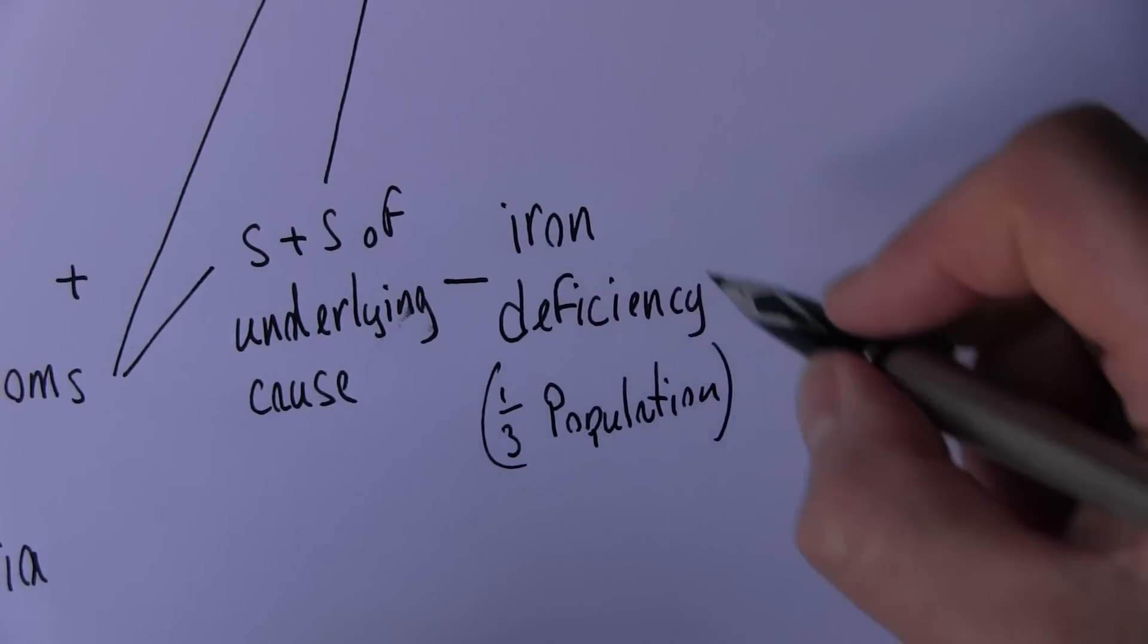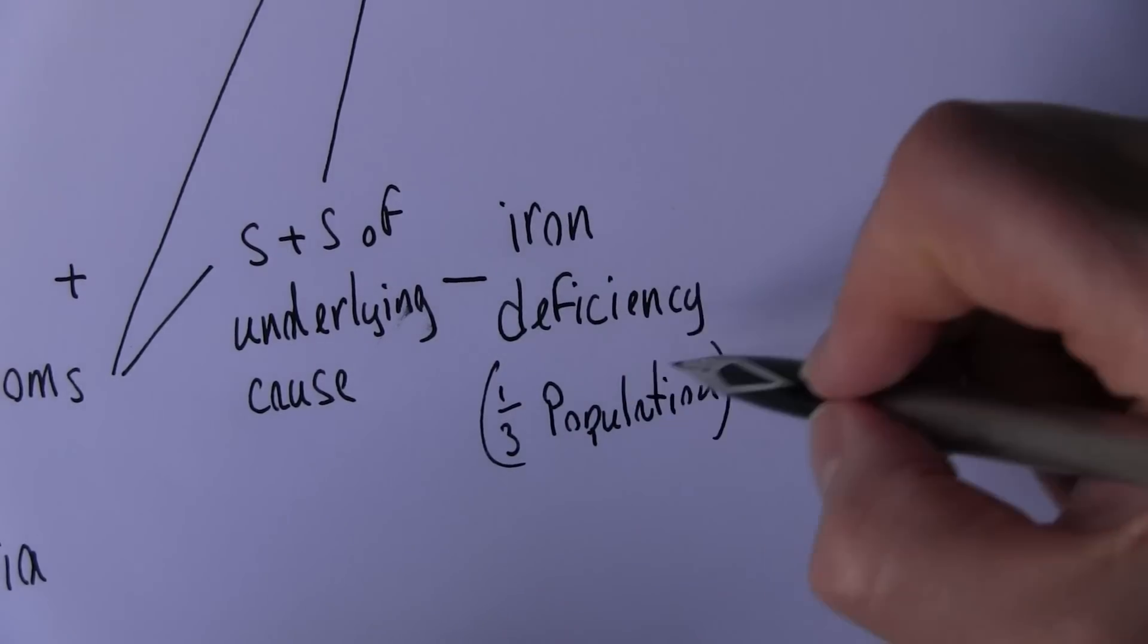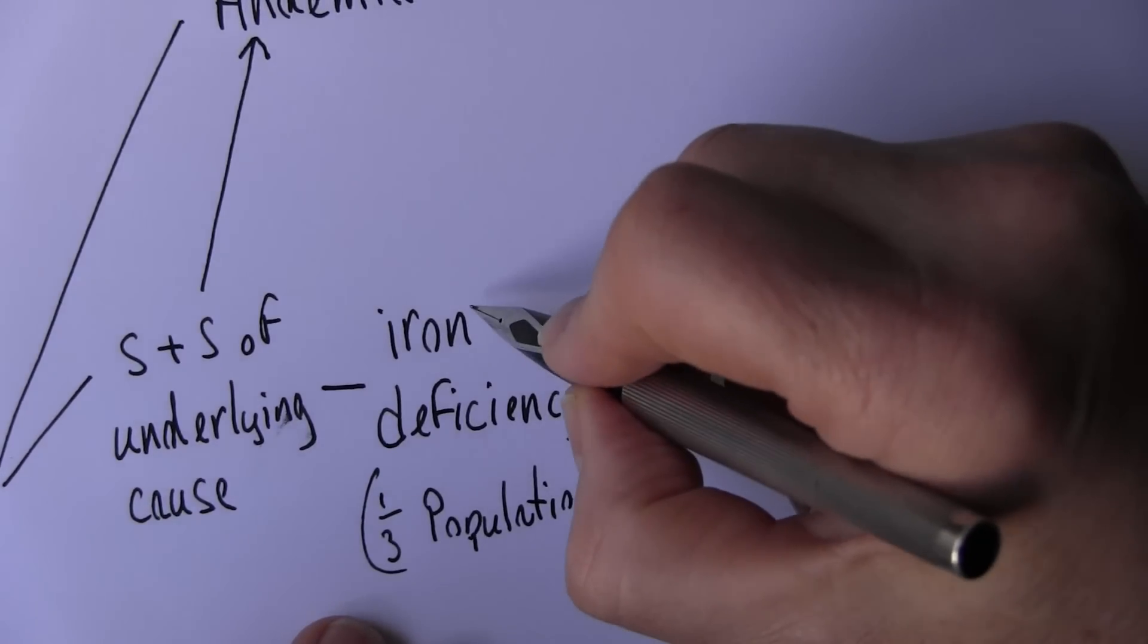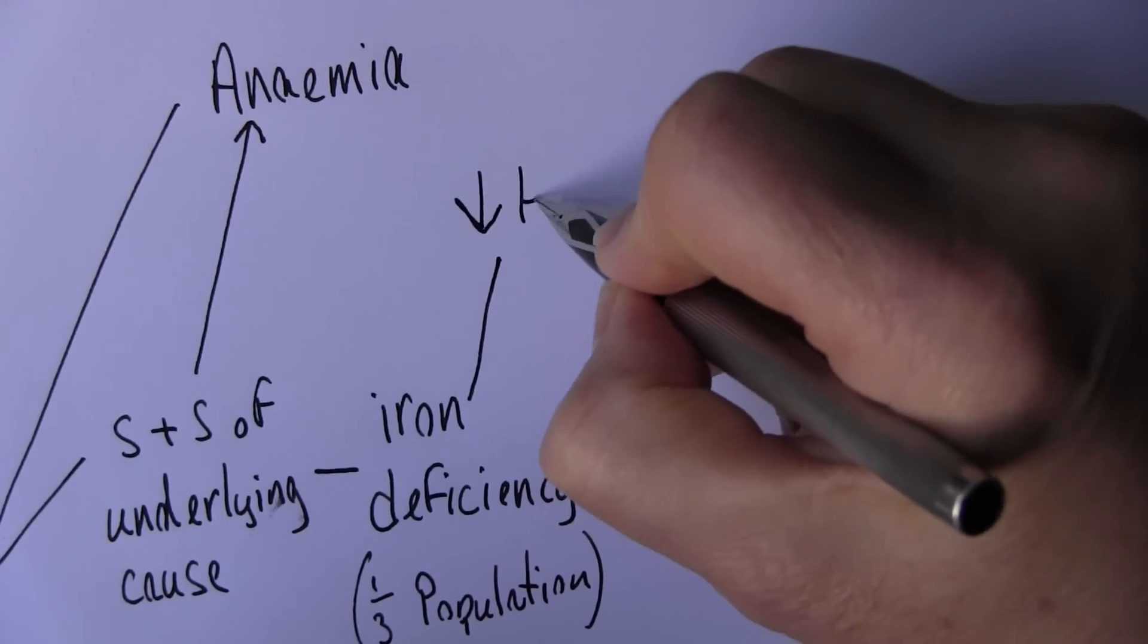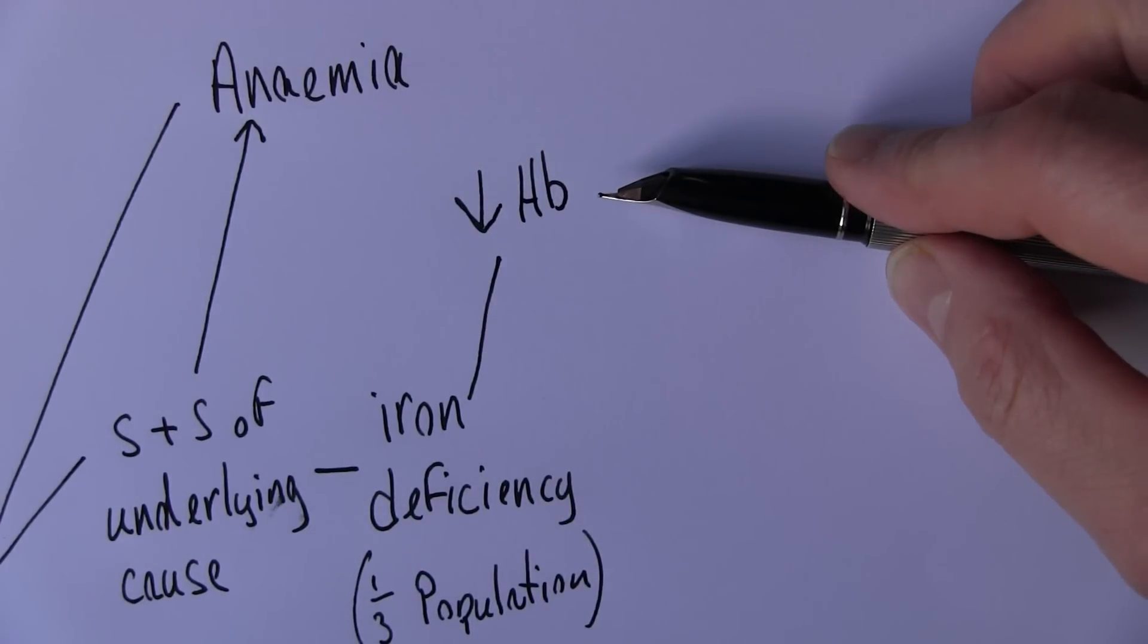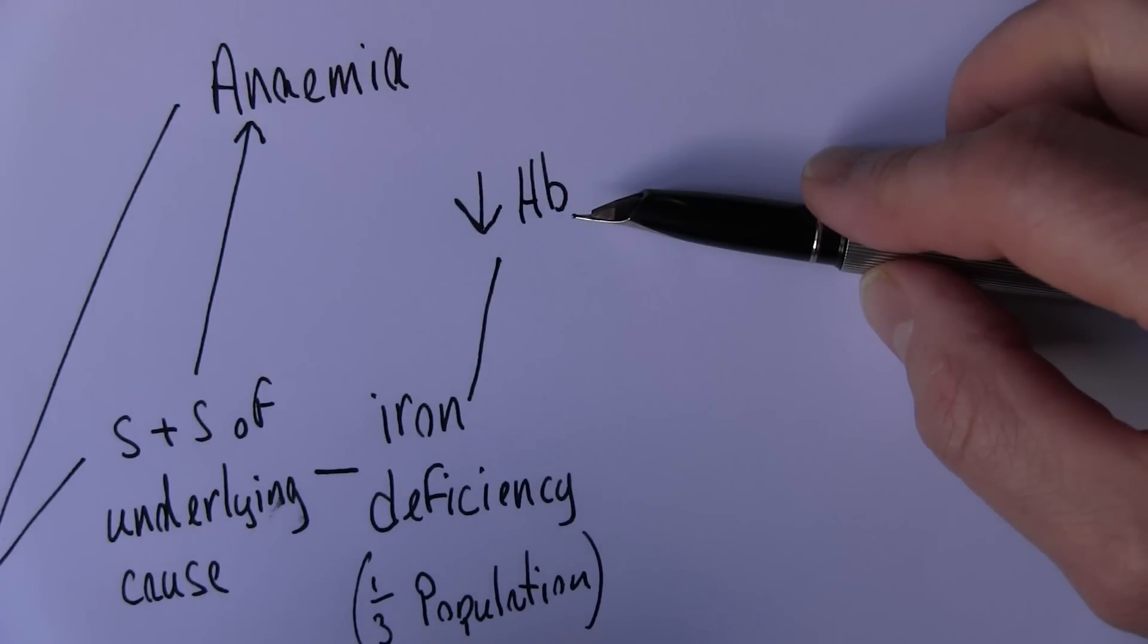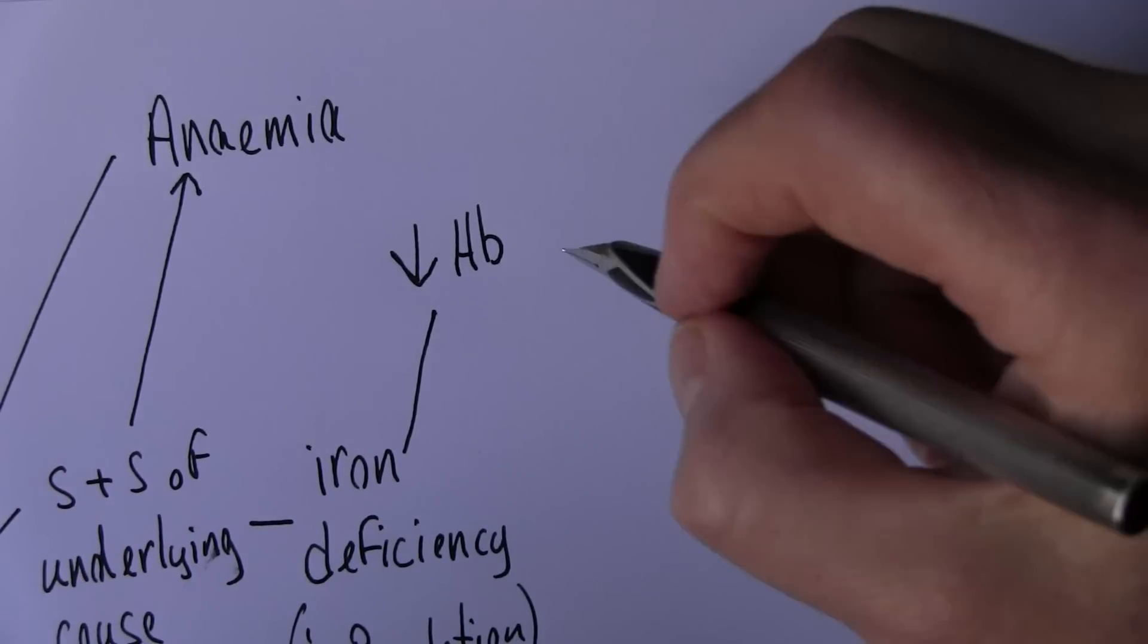So what are the signs and symptoms of iron deficiency? Well iron of course is essential for the formation of the hemoglobin molecule. We know this already. So if there's iron deficiency there's going to be a reduction in the amount of hemoglobin in the body. And the hemoglobin is what makes blood red. So there's going to be less redness if you like in the body because there's less hemoglobin. And one of the features we get with reduced hemoglobin is pallor.